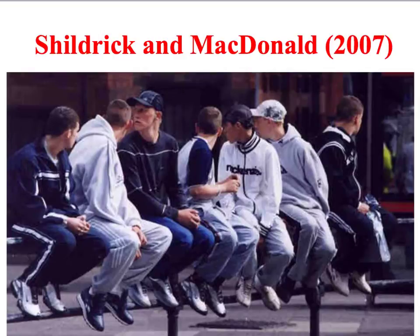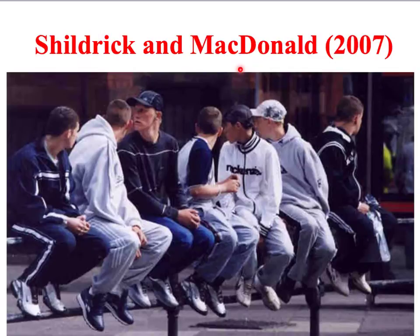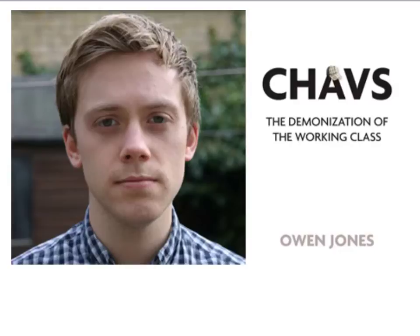A recent development highlighted by Shildrick and Macdonald is the representation and labelling of some sections of the working class as 'chavs.' They suggest this is another way of implying that certain sections of the poor deserve to be poor and are therefore undeserving of public sympathy. This is also highlighted by Owen Jones in his book The Demonisation of the Working Class, where he argues that making brutal, almost sub-racist remarks about working class people is the one acceptable form of discrimination.